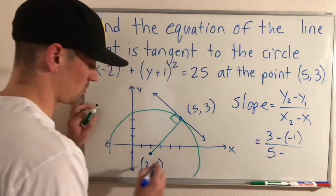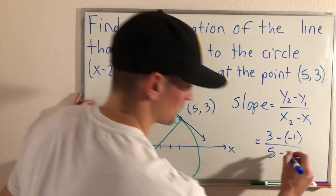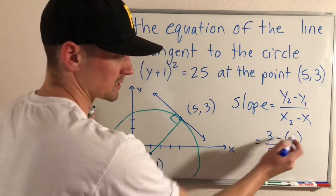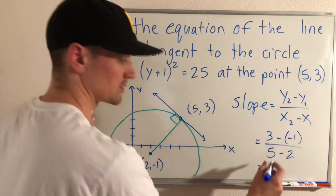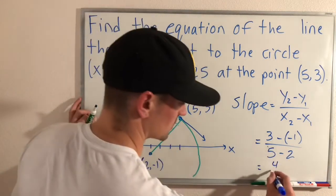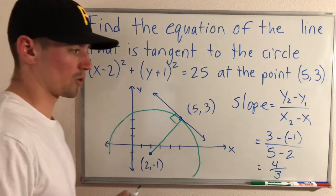So this will give us the slope of this line which will be 3 minus -1 is the same as 3 plus 1 which is 4, and then 5 minus 2 is 3. So the slope of this line is 4/3.